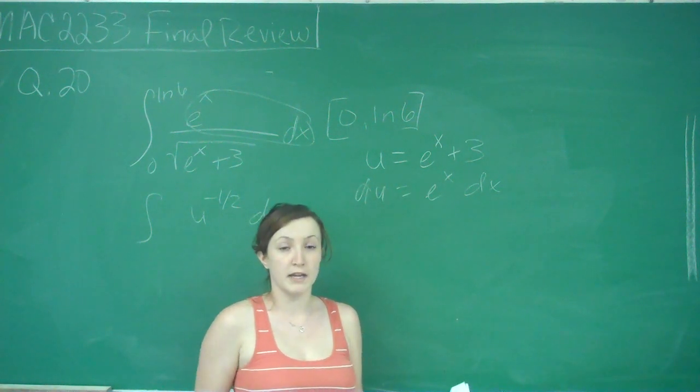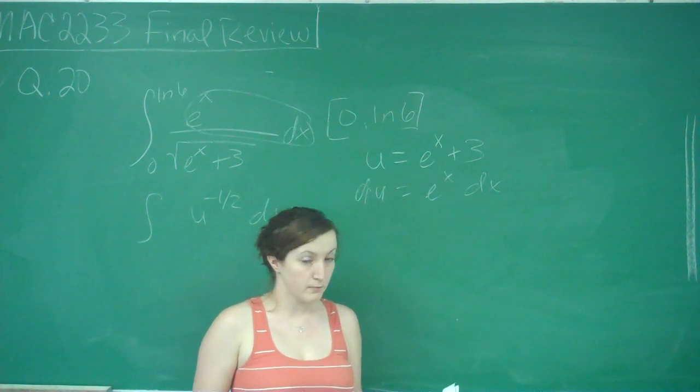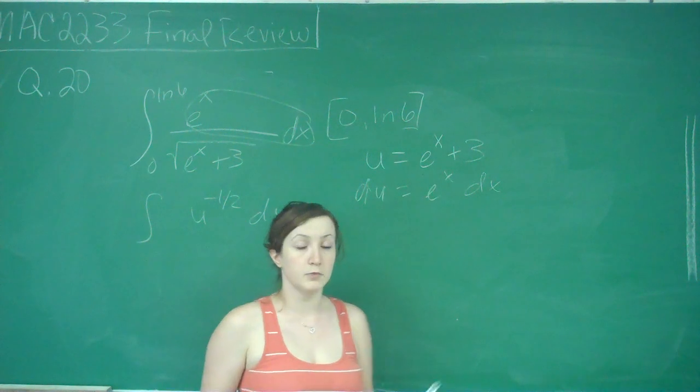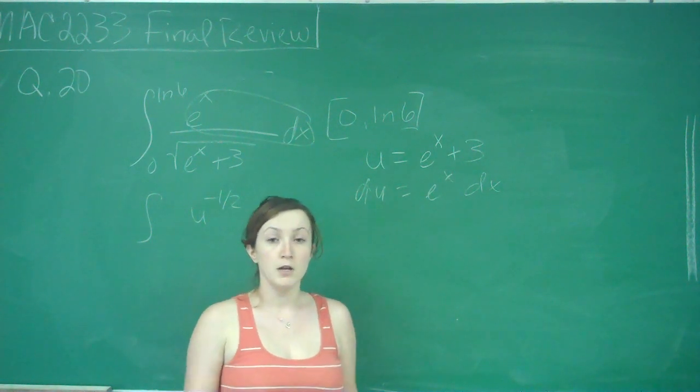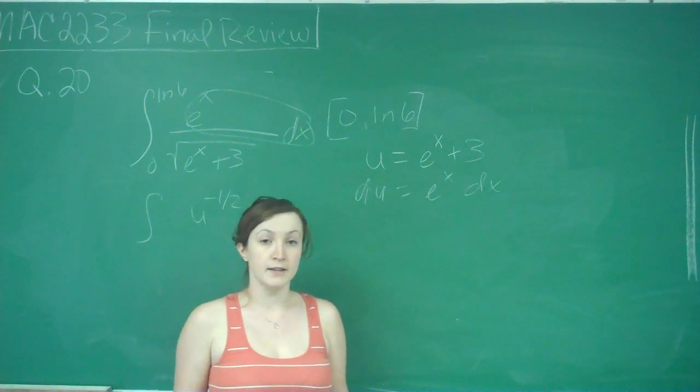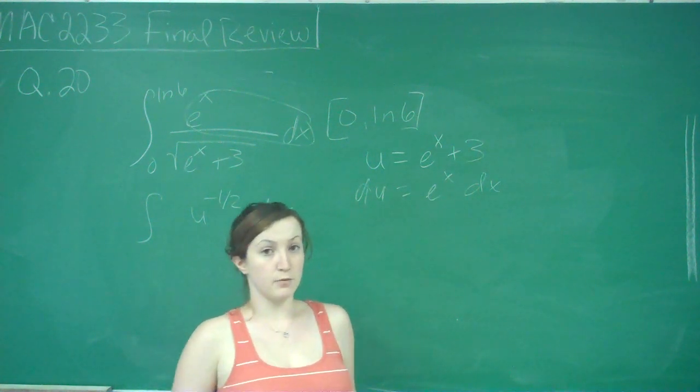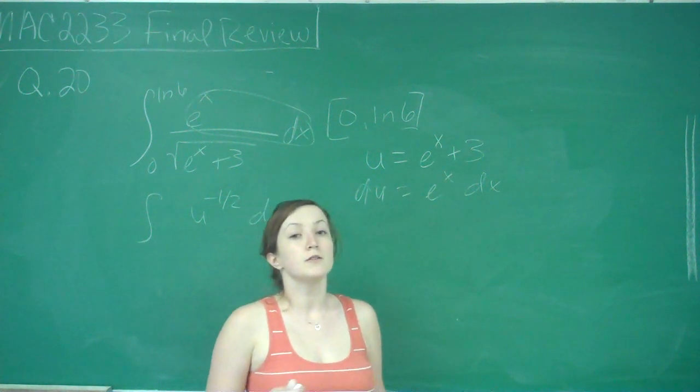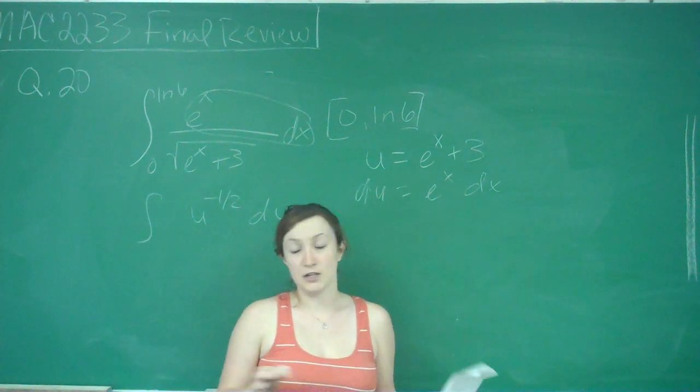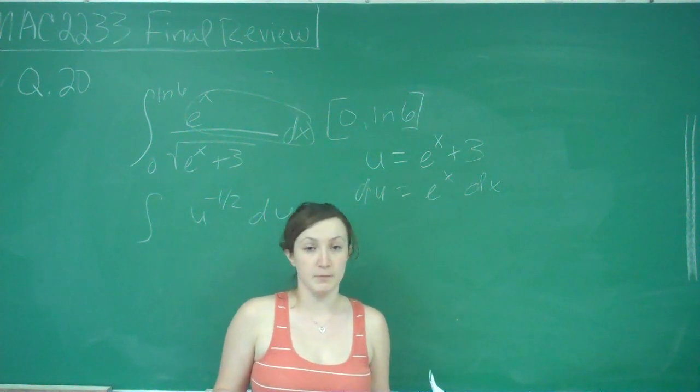And then once you do that, once you change your bounds, you never have to go back in to what you substituted for u. If you don't change your bounds when you make the substitution for u, what you have to do is at the end then, when you go back to plug in those values, you have to change u back into whatever you substituted it in for. So if you want to go ahead, it's almost always a little simpler to do it at the beginning.